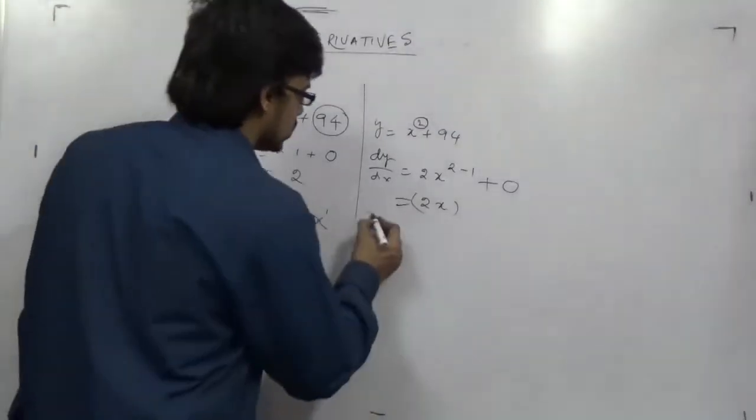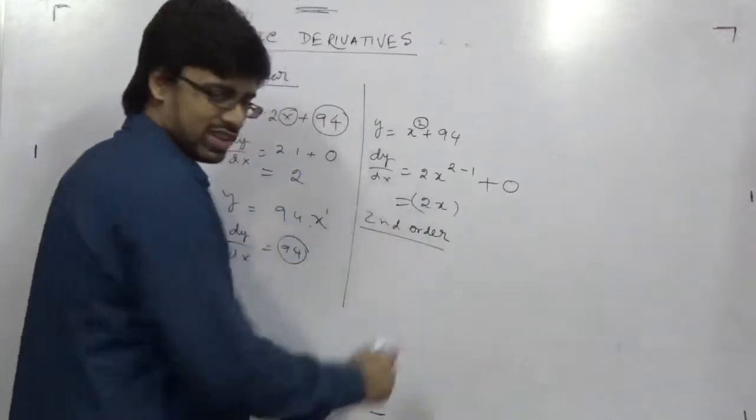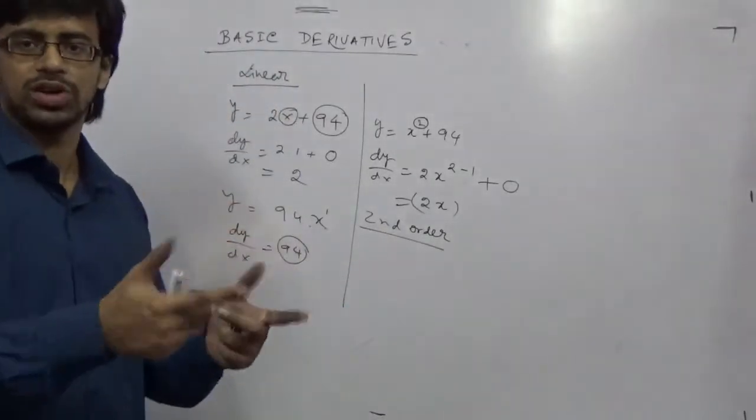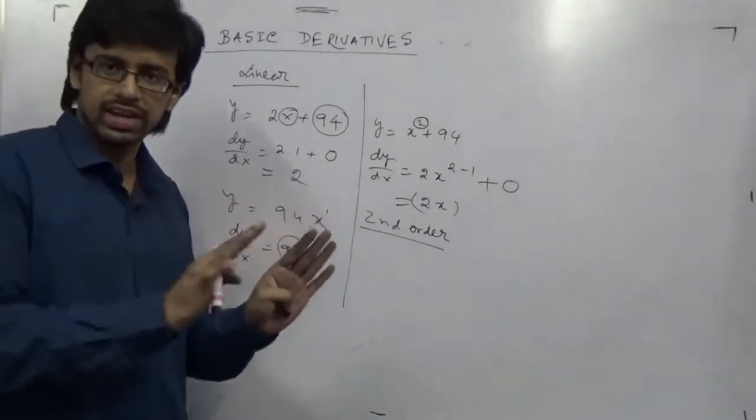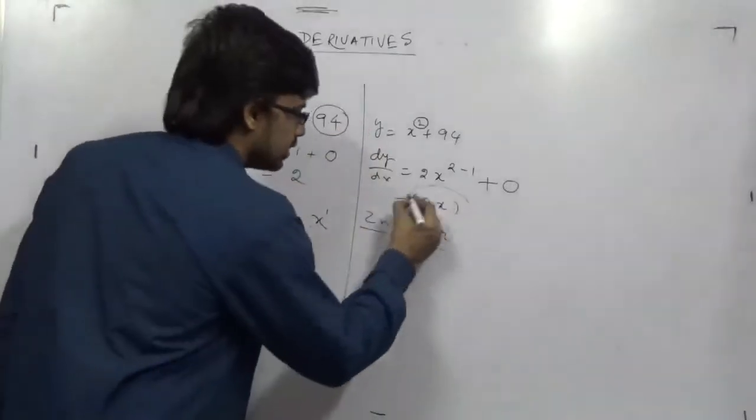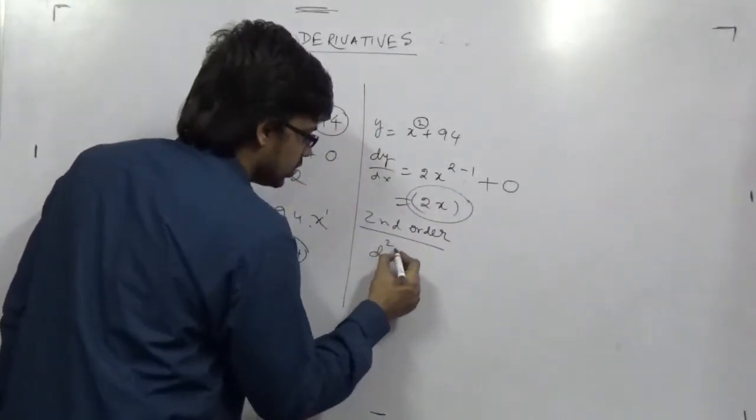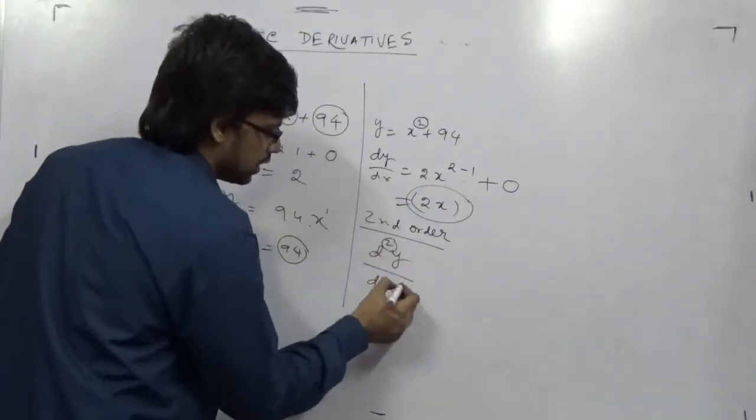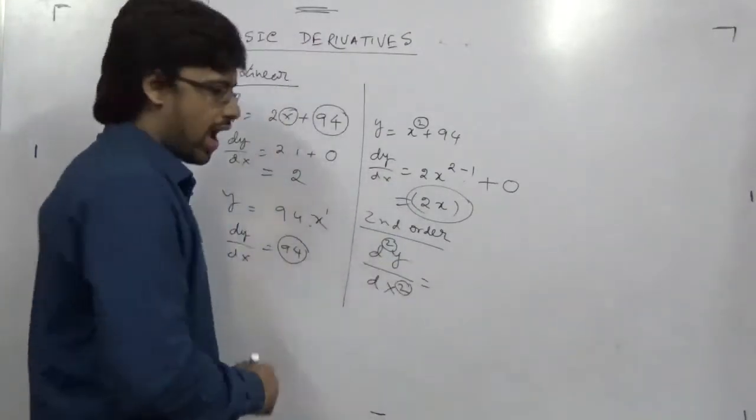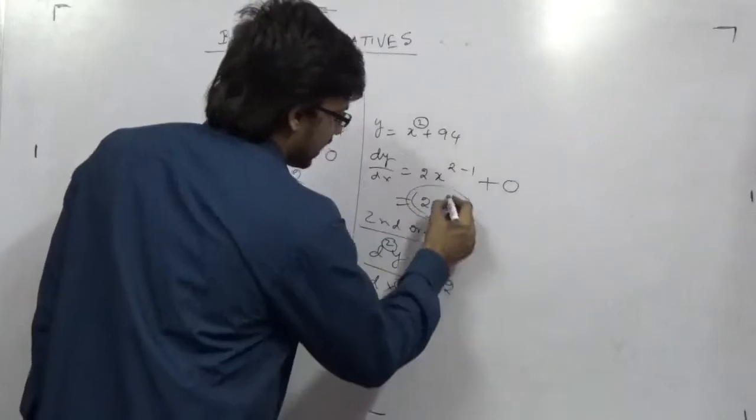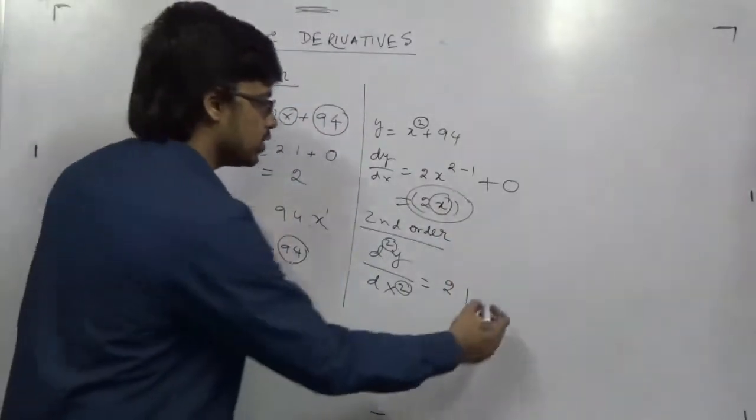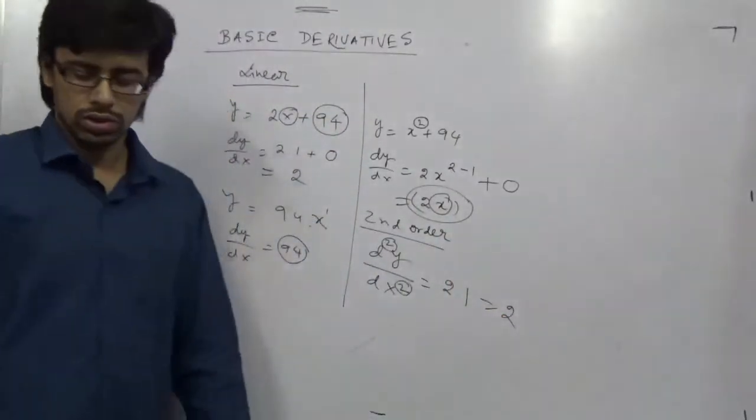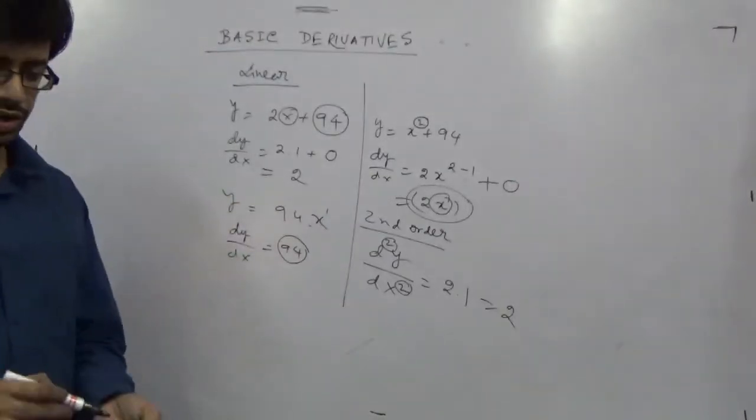There is a second order also. Second order means no new formula for this. You again just have to differentiate. So in general we write it like this: d²y/dx². We have 2 and here is the 2. Don't think it has a square. And this will be 2. Again x derivative. I said anything 1. So 2 into 1, so the answer is 2. So this is all about the basic linear derivative.